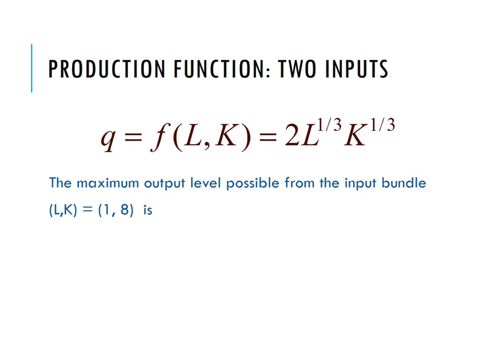Here's an example of a production function. I have quantity as a function of labor and capital: q = 2L^(1/3)K^(1/3). We can take this expression—two times the number of workers raised to the one-third power times the amount of capital raised to the one-third power—and plug in the numbers to find the quantity.